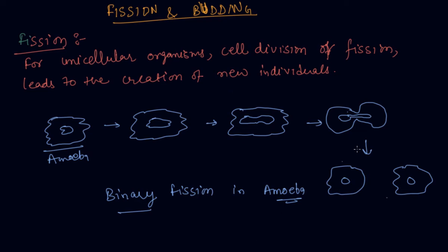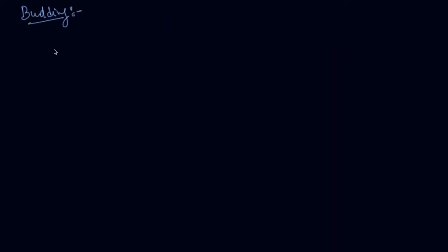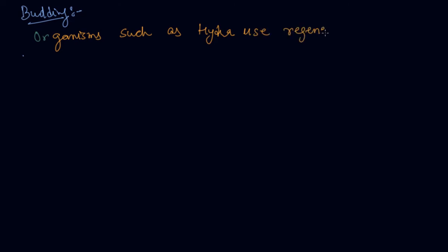Now let's discuss about budding. This is also a type of mode of reproduction used by single organisms. What happens in budding is organisms such as hydra use regenerative cells for reproduction. Regenerative means the cells that can produce — regenerative cells are used for reproduction in the process of budding.